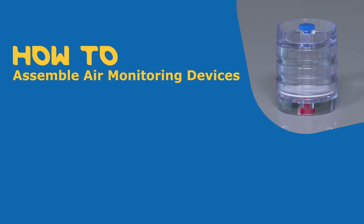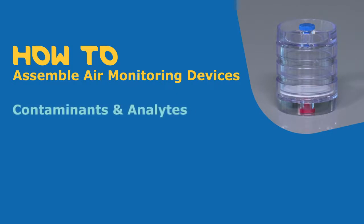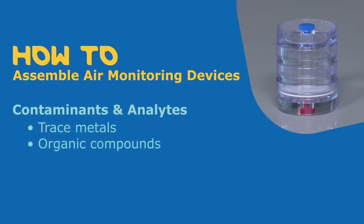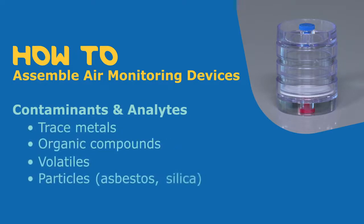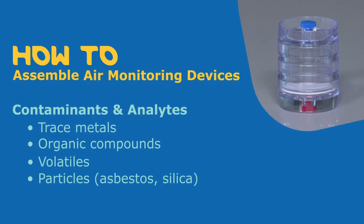Air monitoring cassettes are used to monitor for a wide variety of contaminants and analytes including trace metals, organic compounds, volatiles and such particles as asbestos or silica within an environment.